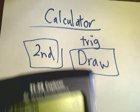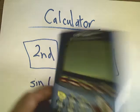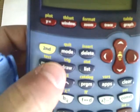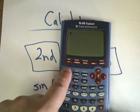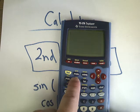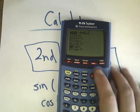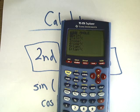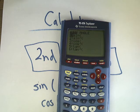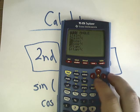The calculator has the trigonometric functions already in there. See that button? It says trig — right above the draw button. To get to the trig functions, all you have to do is hit second, then hit trig. That's where sine is located. You'll see sine negative one, cosine negative one, and tangent negative one. For today, you do not have to worry about those — only use sine, cosine, and tangent.